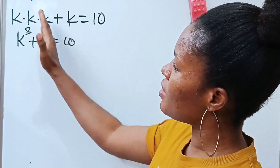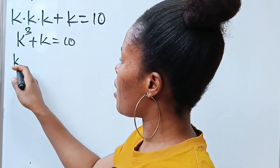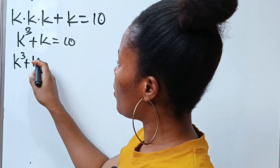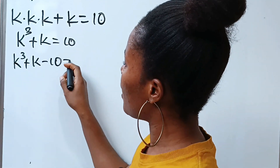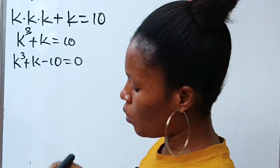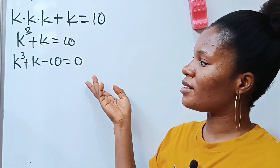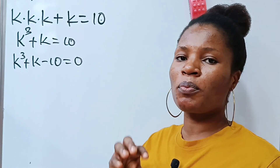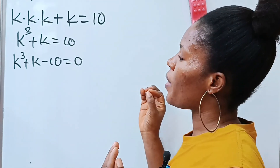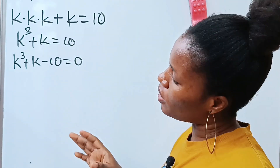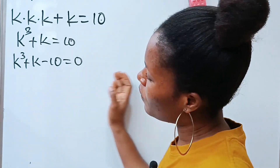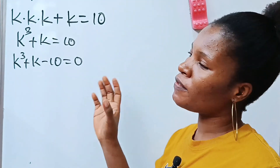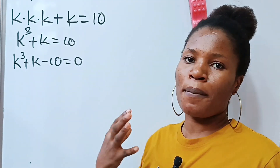Now let's transfer this to the other side, so we have k to the power of 3 plus k minus 10 is equal to 0. Notice that we have formed a cubic polynomial, so we are going to solve this as a polynomial.